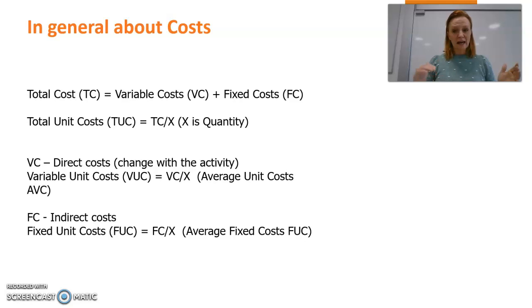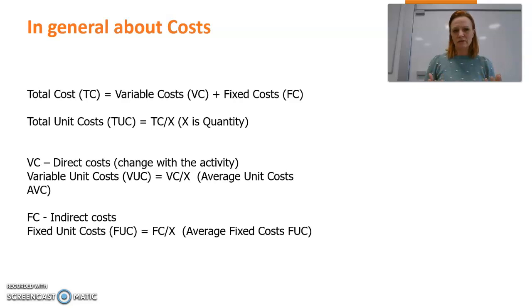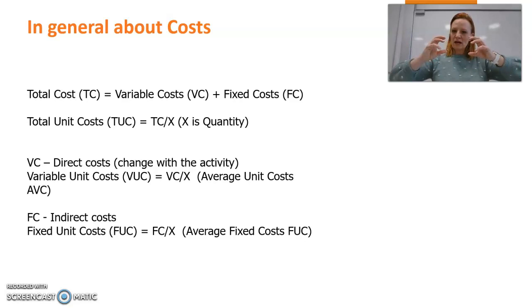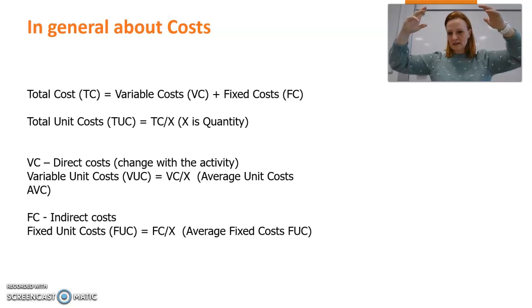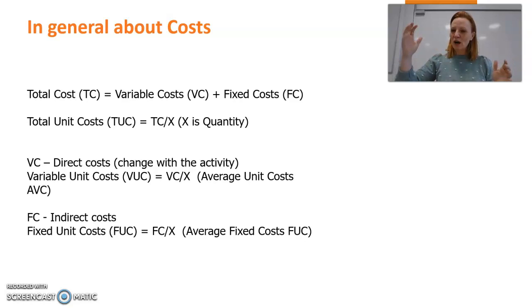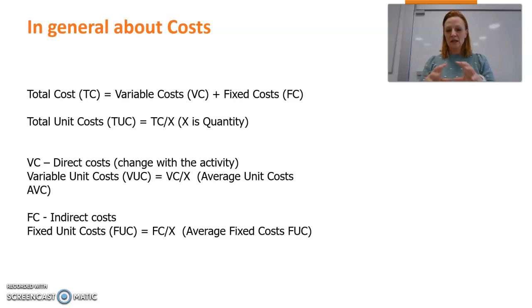Fixed costs can vary, but not directly according to the activity. Take marketing costs as an example: they can easily be variable, especially in digital marketing where we talk about cost per click or cost per order, directly related to number of orders or sales. But very often marketing costs are a fixed amount in a period of time — your revenue may go up, but you can't directly relate it one-to-one to marketing costs. Dividing fixed costs by quantity X gives fixed unit costs or average fixed costs.